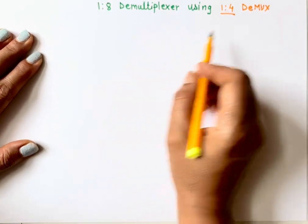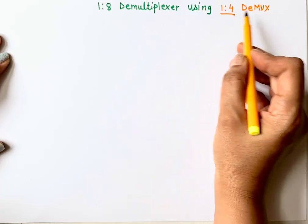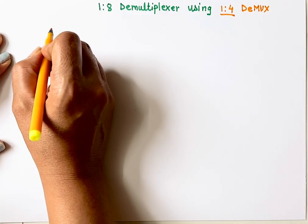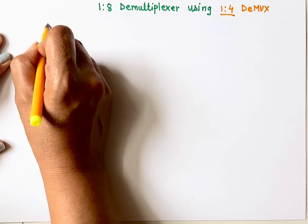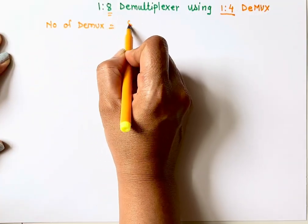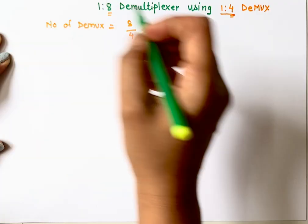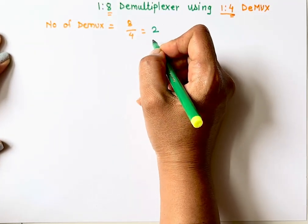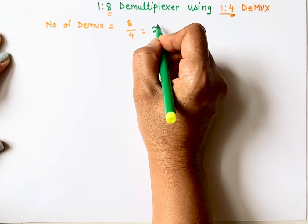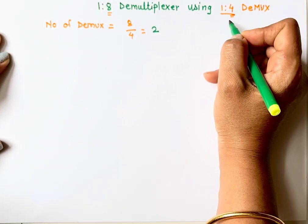When we have a demultiplexer with fewer outputs and we want more outputs, the first step is to find out how many demultiplexers are needed. Only one demultiplexer is not enough. The number of demultiplexers equals the desired outputs divided by available outputs: 8 divided by 4 equals 2. We cannot further divide 2 by 4, so we need 2 demultiplexers. I will draw two 1x4 demultiplexers and then see how to connect them.